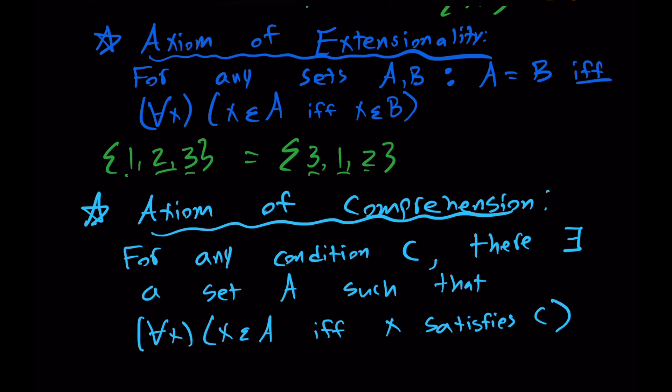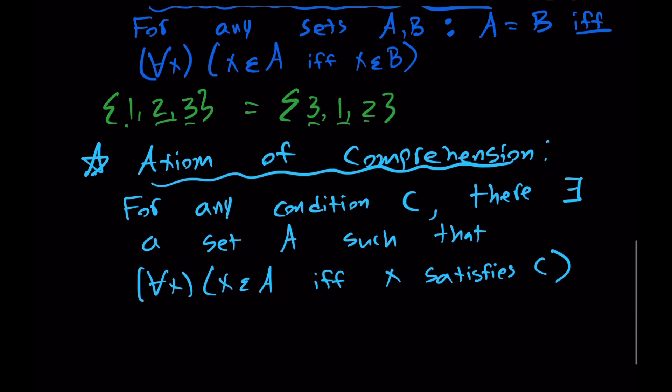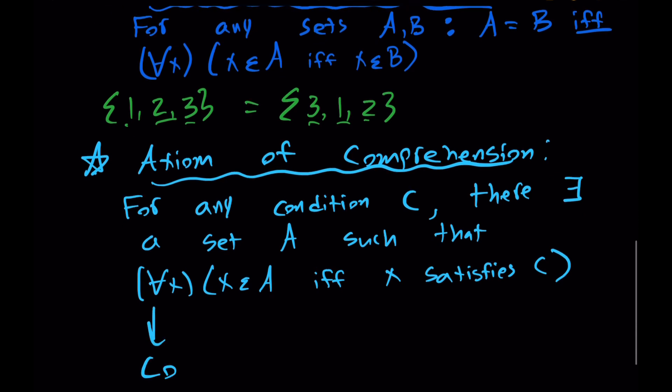And again, we can make this a little bit more formal with the notation, but for our purposes, this is good. There's a set of things satisfying any given condition. But this axiom cannot be true because it leads to contradictions.